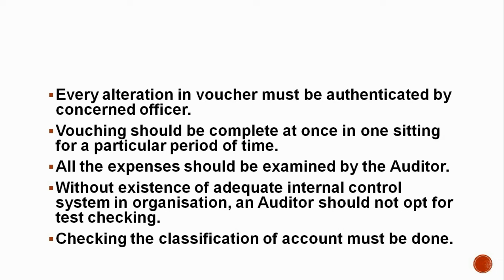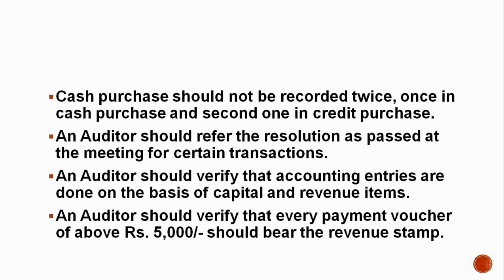Checking the classification of accounts must be done to confirm they are classified as per their nature. Cash purchases should not be recorded twice — once in cash and once in credit. An auditor should refer to resolutions passed at meetings for certain transactions, verifying whether such a resolution was indeed passed. Accounting entries should be done on the basis of capital and revenue items. Any payment voucher above rupees 5000 should carry a revenue stamp.